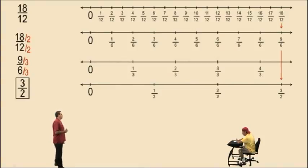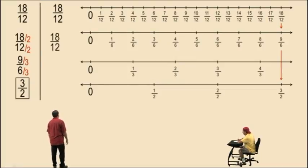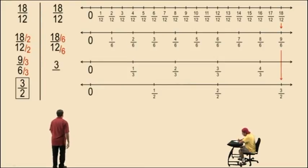Alright, now notice we divided by 2 and then we divided by 3, top and bottom. But you might be thinking, hey, could we have done this all in one step? Yes, we could have. If we had noticed that 18 and 12 have a common factor of 6, we could have divided both top and bottom by 6 and got the answer in one step. So sometimes that happens.